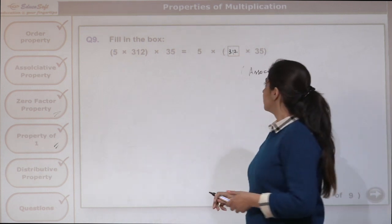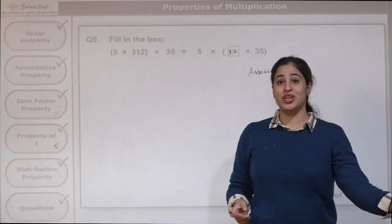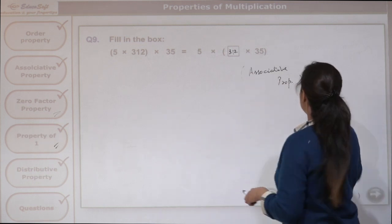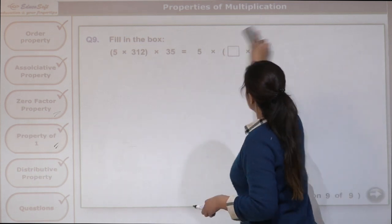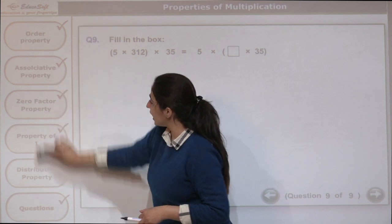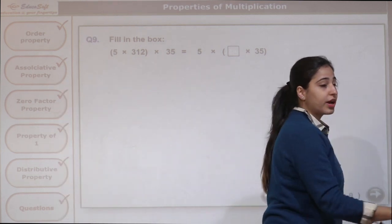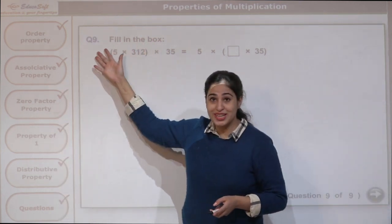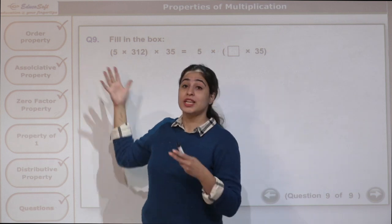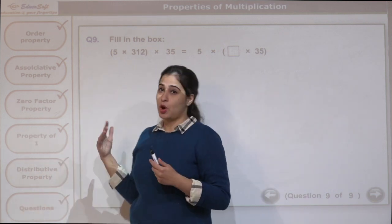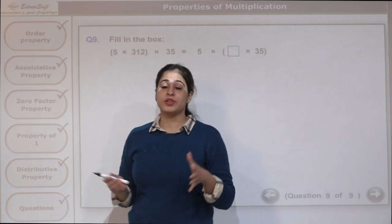So these were our questions related to properties of multiplication. Questions can relate to any of the 5 properties. What are the 5 properties? Order property, associative property, zero factor property, property of 1, and distributive property.